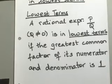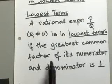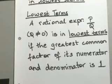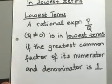Whatever expression you have, you want to check to make sure for it to be in lowest terms, you have to satisfy this condition. Your greatest common factor of the numerator and denominator has to be a 1.